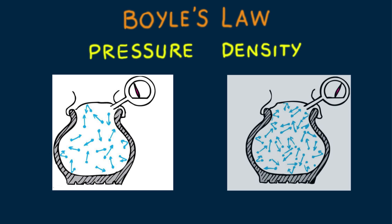Suppose there are twice as many molecules in the same volume. Then the air density is doubled. If the molecules move at the same average speed, or equivalently if they have the same temperature, then the number of collisions will be doubled. This means the pressure is doubled. So pressure is proportional to density.